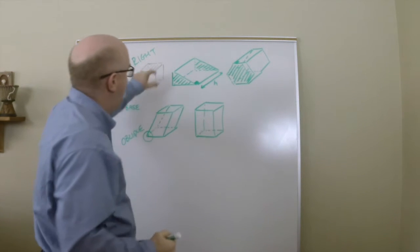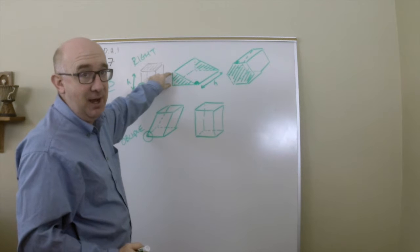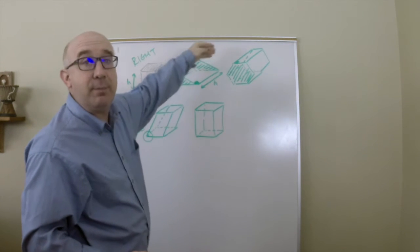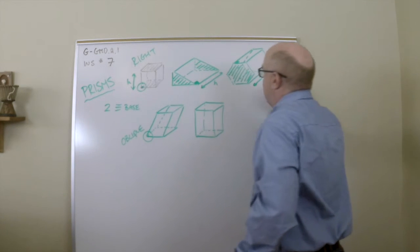But in this case the bases are laying kind of across from each other, so the height would actually be from here to here, not this. This would be the height of the base of the triangle but it would not be the height of the prism. Here again you would have your height along here.